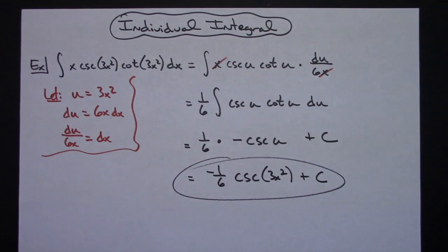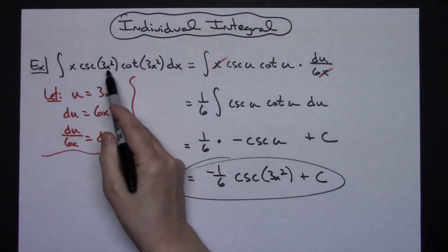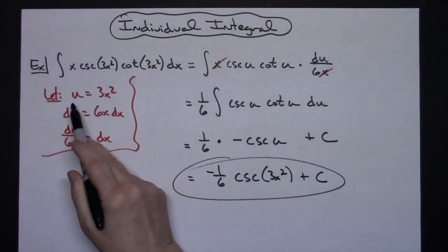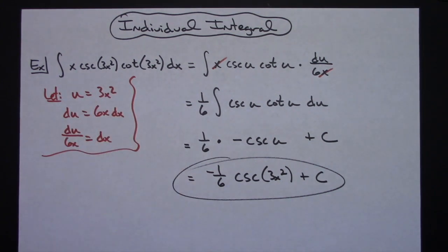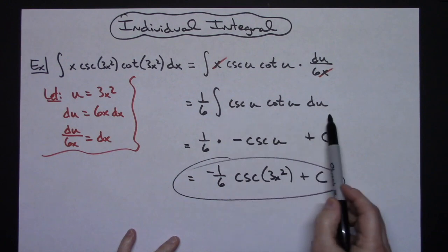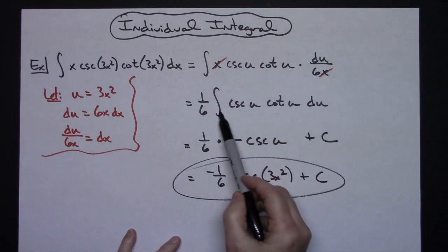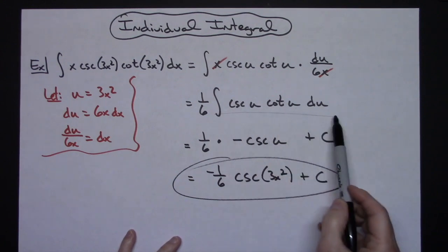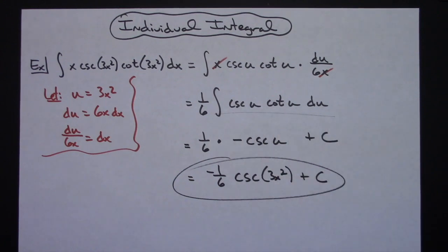A straightforward u substitution problem that you would learn very early on. You pick that inside function for your u, it works out nicely, and then you need to have this trig integral memorized in order to complete the problem.